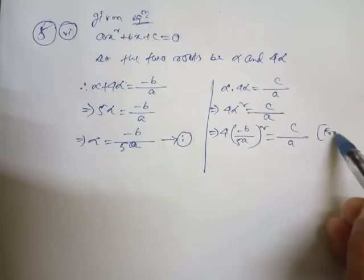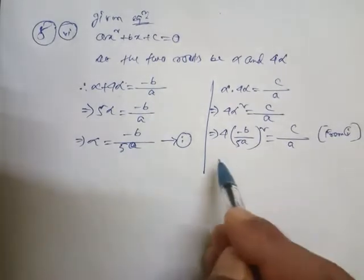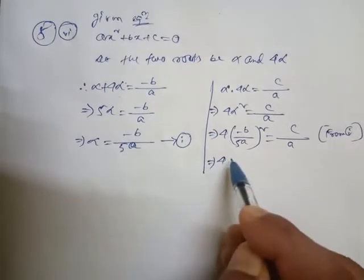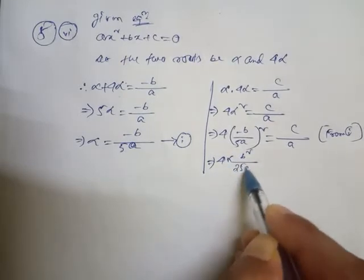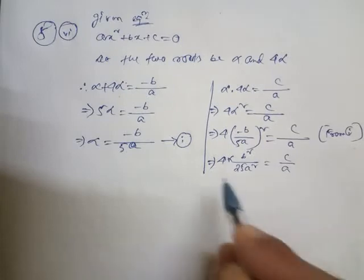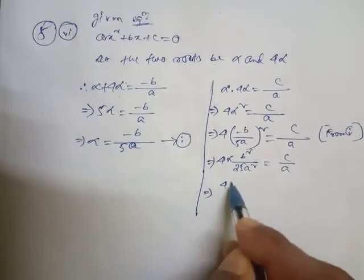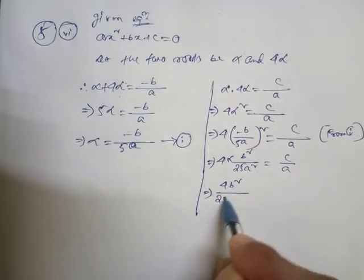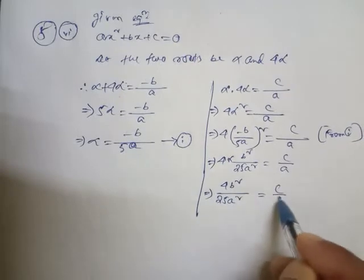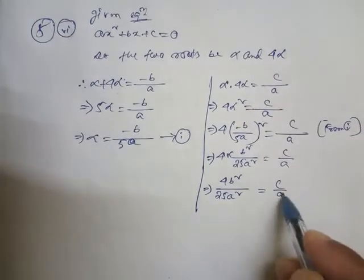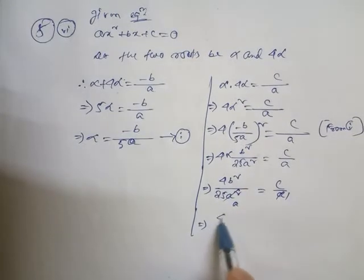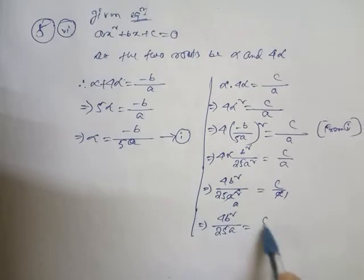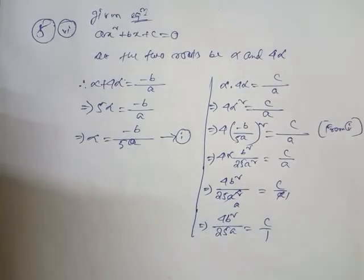From equation one, substituting alpha: four into b² over 25a² equals c by a. So four b² by 25a² equals c by a. Now we cancel the a.